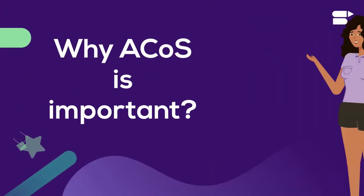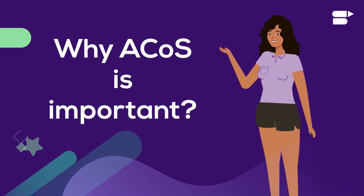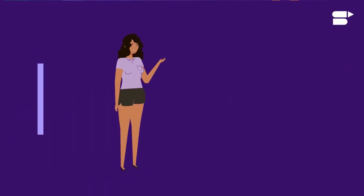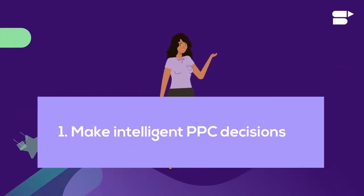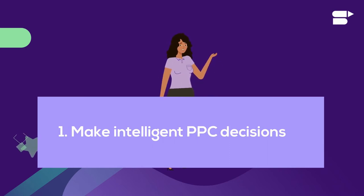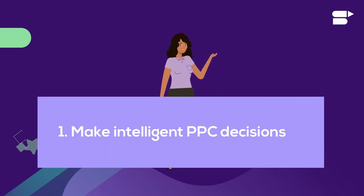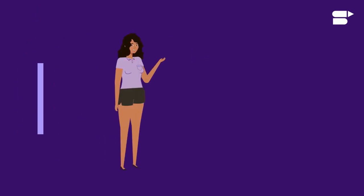Let's take a glance into why measuring your ACoS is important in three quick points. Number one, it helps you make intelligent PPC decisions. The ACoS calculator helps you understand the exact profit points, the break-even ACoS, and the profitability of the product — whether to decrease or increase the ad bids and budget to optimize your PPC campaigns.